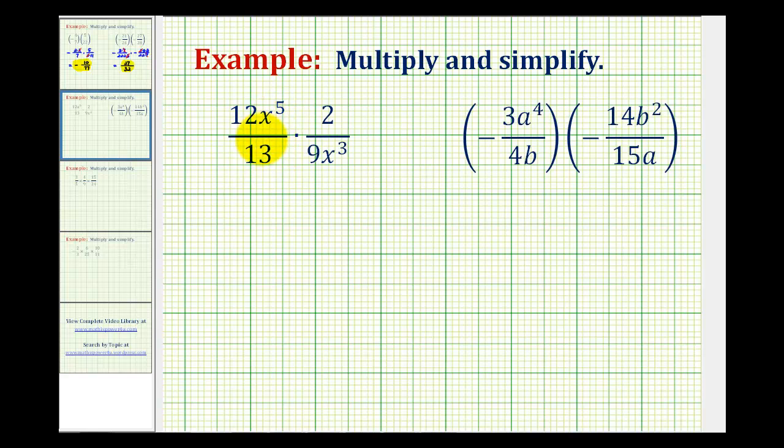Which means to simplify this before we multiply, we're going to write everything out in prime factored form to identify the common factors between any numerator and any denominator that would simplify to one.